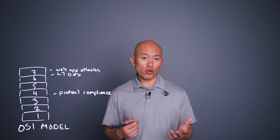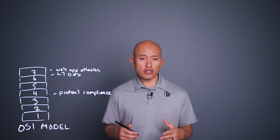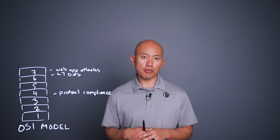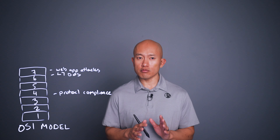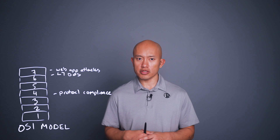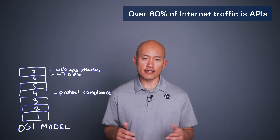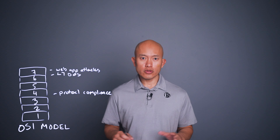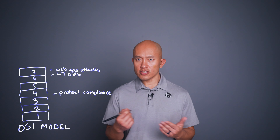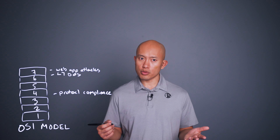A WAF can also provide layer four protections and enforce compliancy with protocols. Now where the definition of WAAP starts to differ is the added API protection. Over the last few years, the use of APIs has grown exponentially, as most mobile applications make use of APIs as well as server-to-server communication. In fact, it's estimated that over 80% of internet traffic today is API. OWASP even has a Top 10 just for APIs, and as APIs are the entry point for application access, they're also an entry point for attackers.